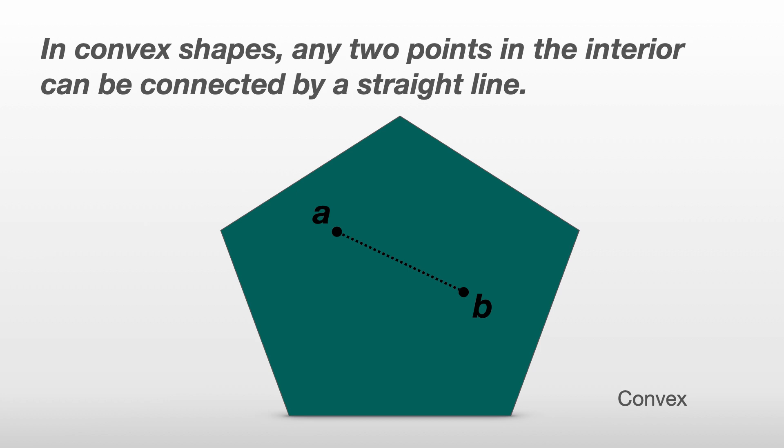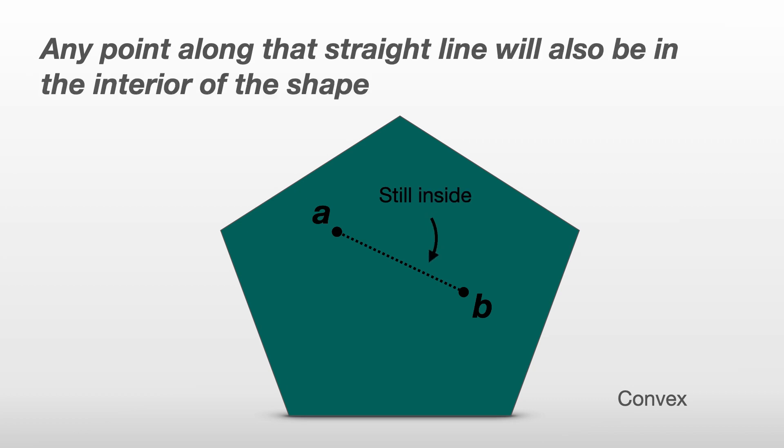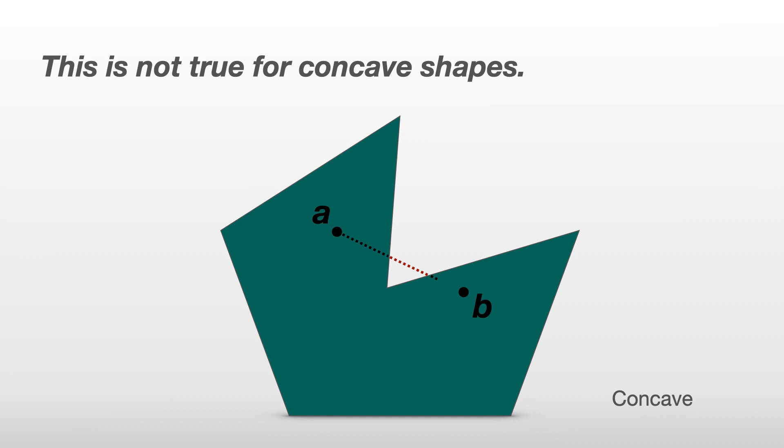Perhaps the best way to tell if a shape is convex is if you choose any two points within the interior of the shape and draw a straight line connecting them. If it is convex, any point along this line will still be inside the shape. It's easy to see that this is not true for concave shapes.